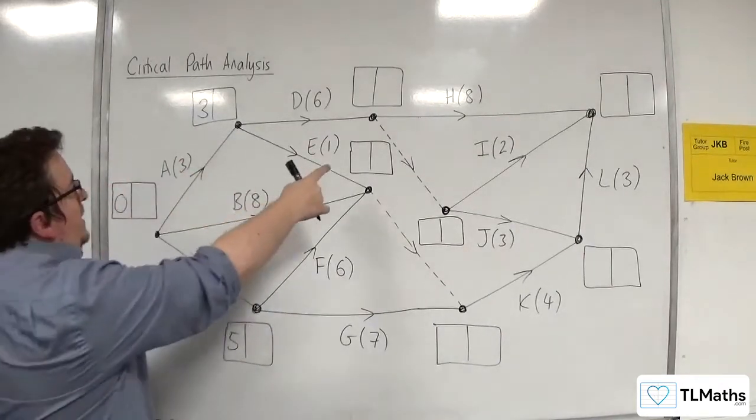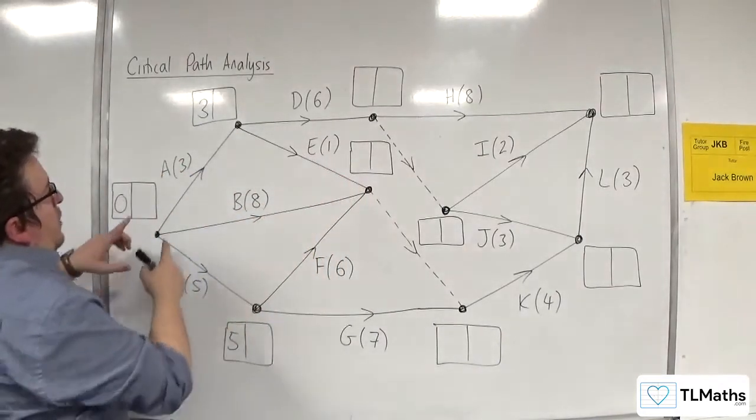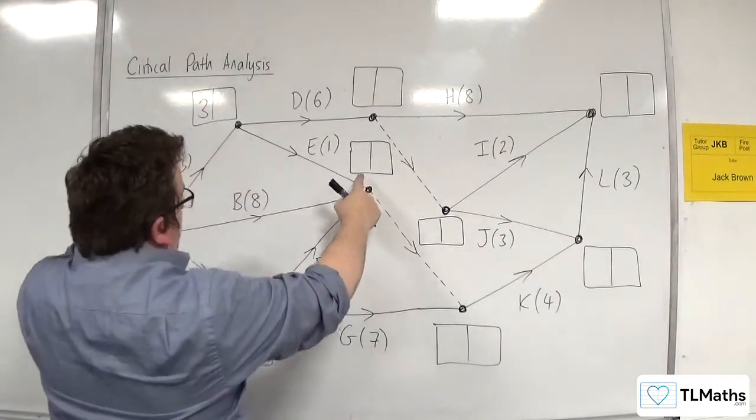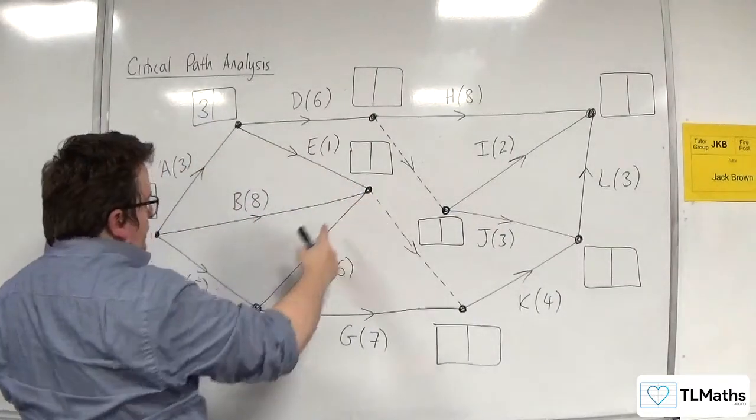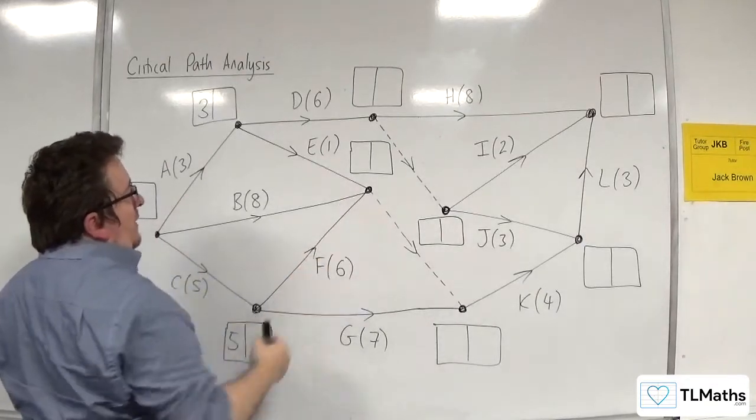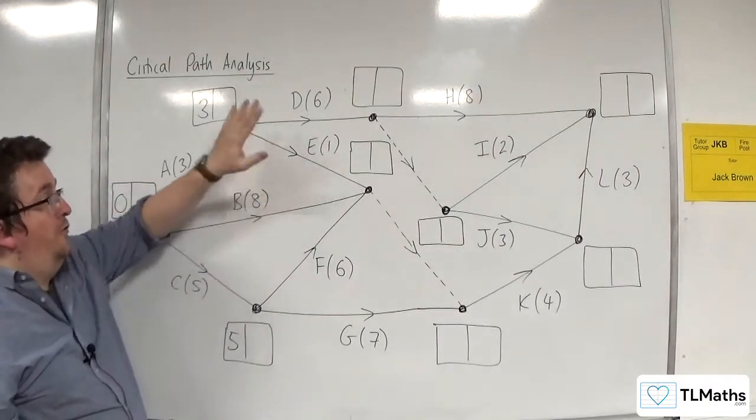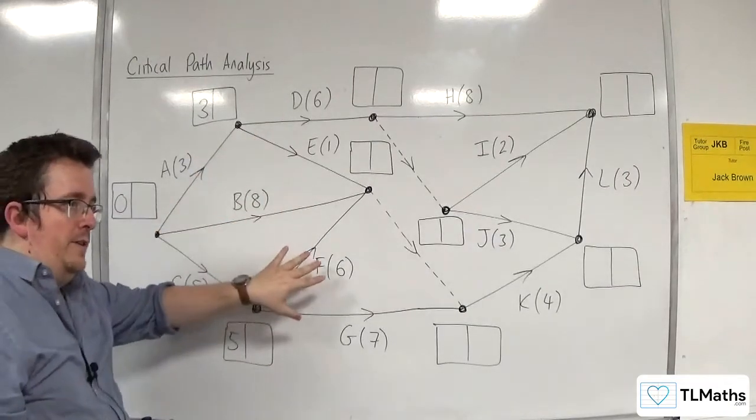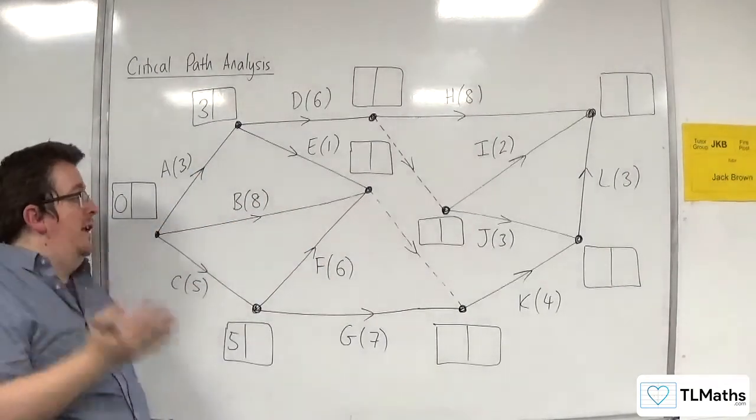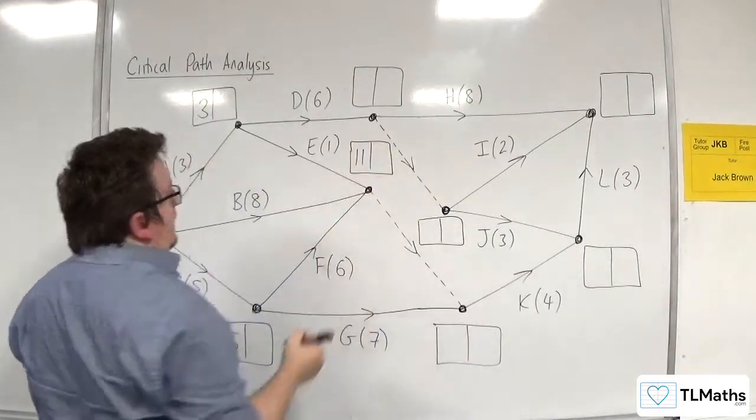Right, now we can do this one. So we've got 3 plus 1 is 4, or 8, or 5 plus 6 is 11. So 4 or 8, or 11. So you need to go for the largest of those, so that would be 11 in there.